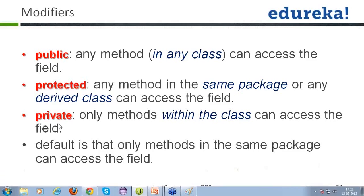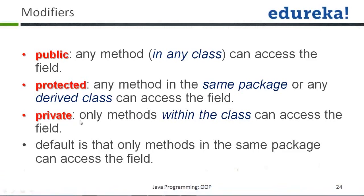The third access modifier is private. If an entity is declared private, only methods within the same class can access that field — it can only be used within that particular class itself. Finally, when you do not mention public, protected, or private, it takes the default, which means only methods in the same package can access the field.